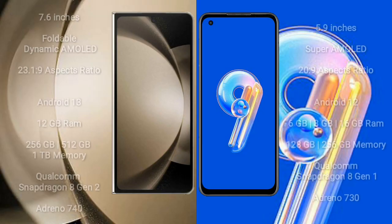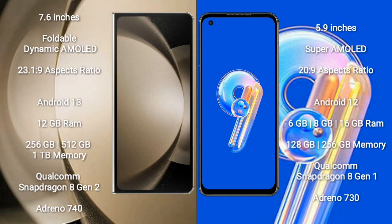Samsung Galaxy Z Fold 5 comes with a 7.6-inch foldable dynamic AMOLED display with an aspect ratio of 23.1:9. Asus Zenfone 9 comes with a 5.9-inch Super AMOLED display with an aspect ratio of 22:9.